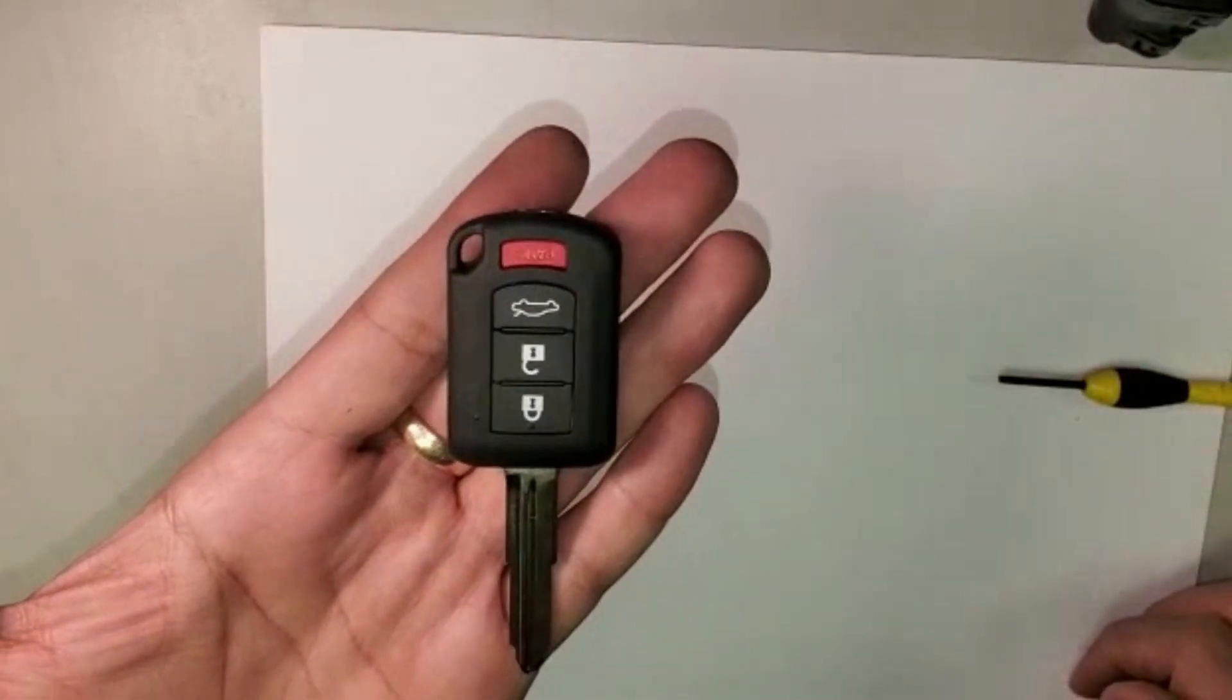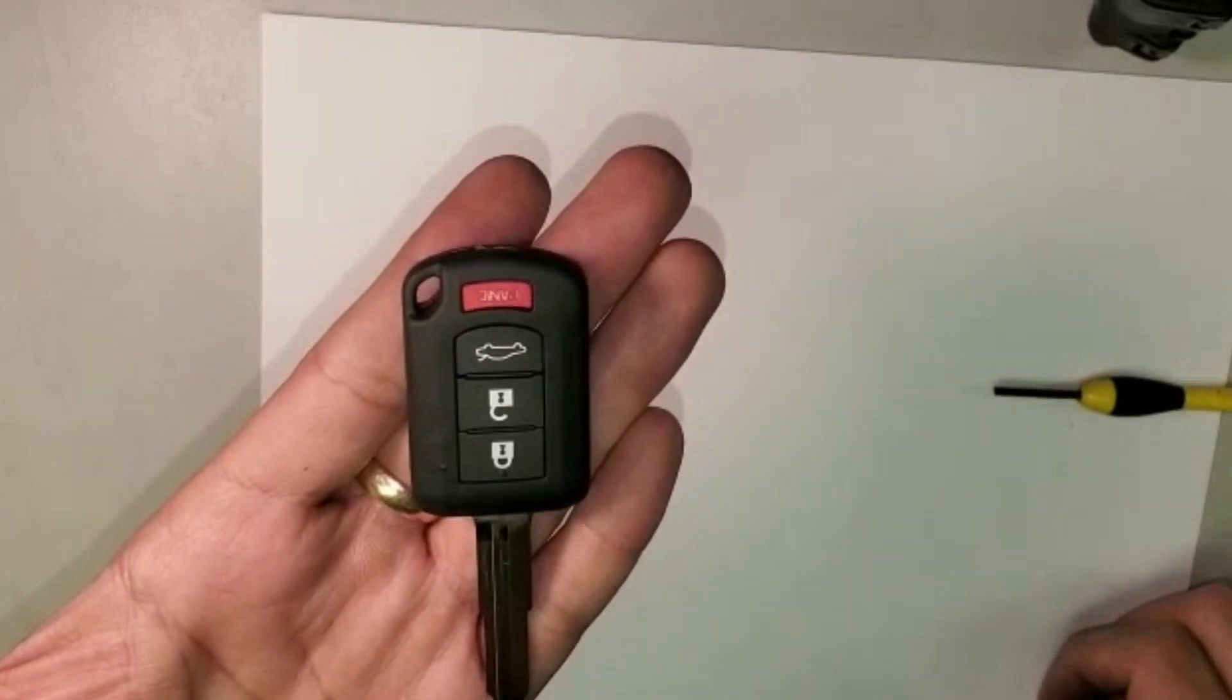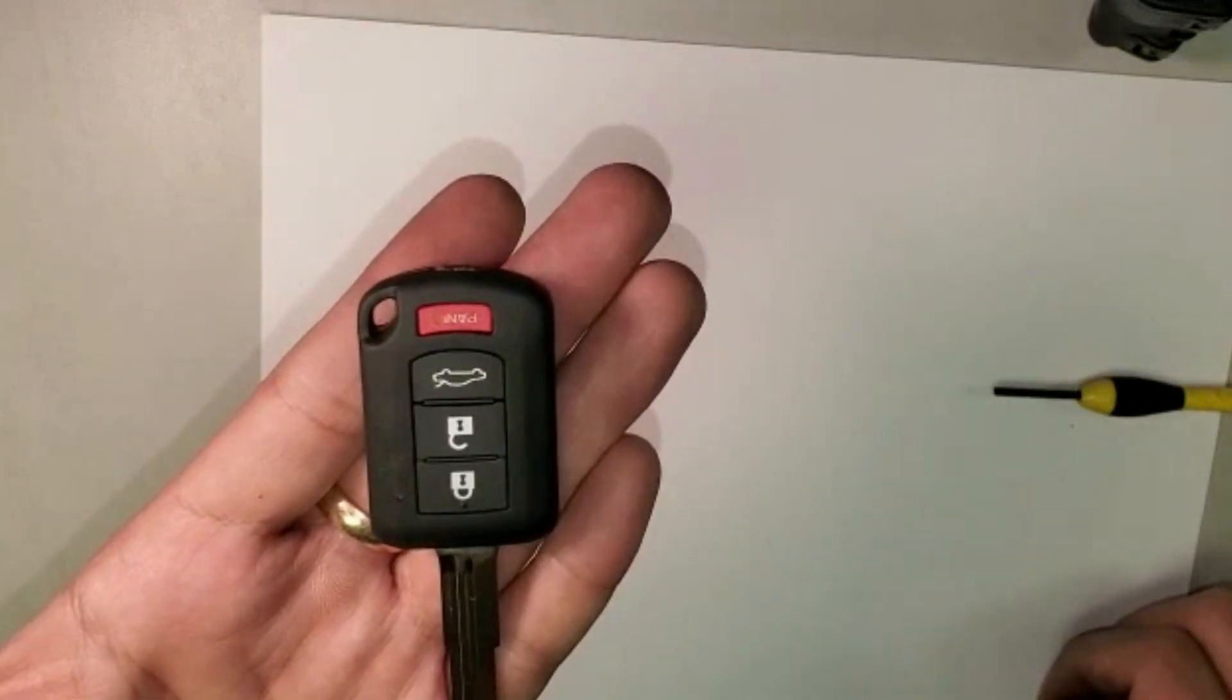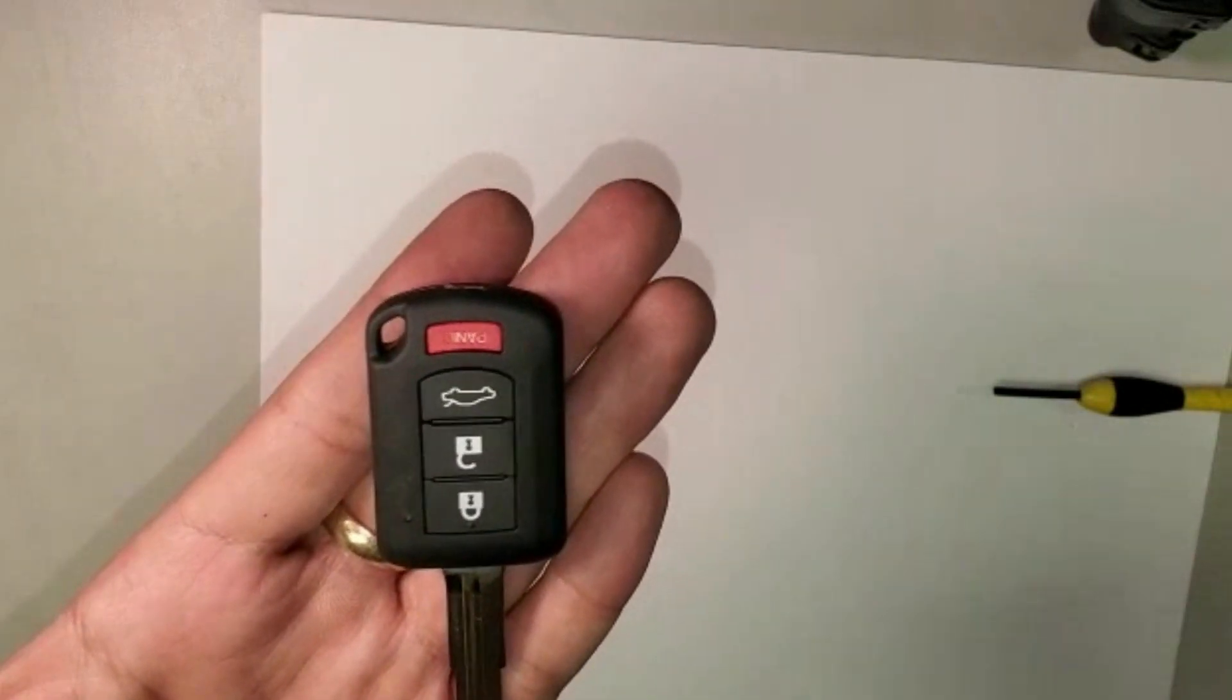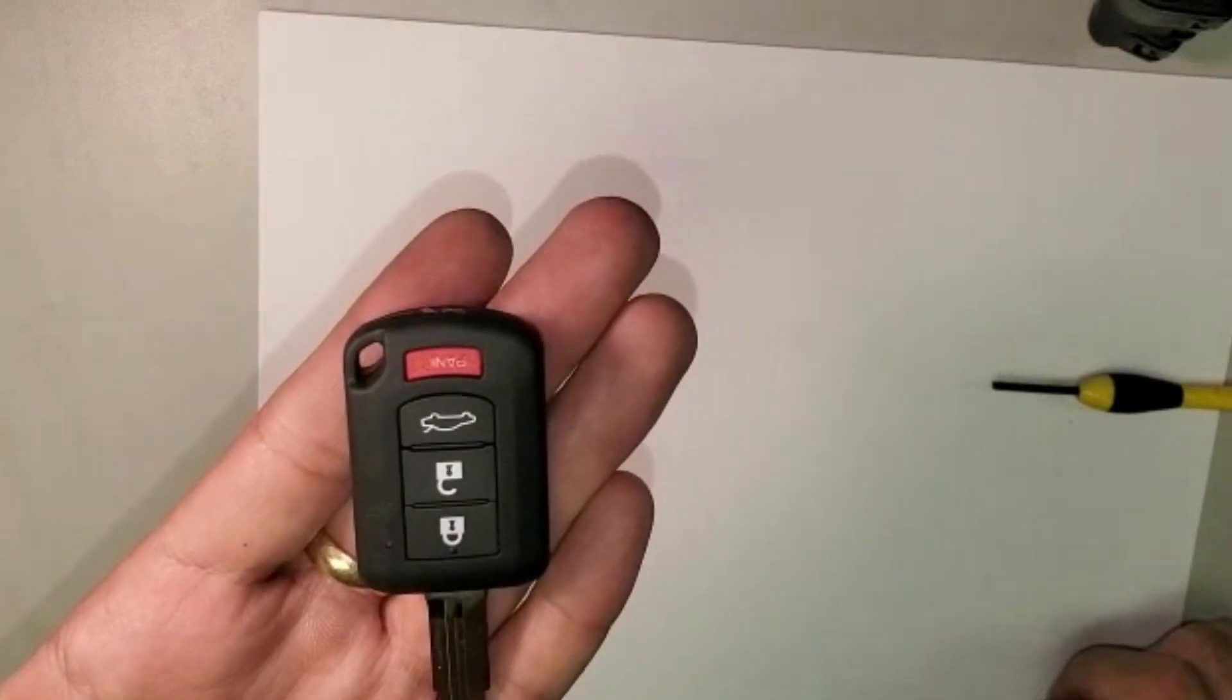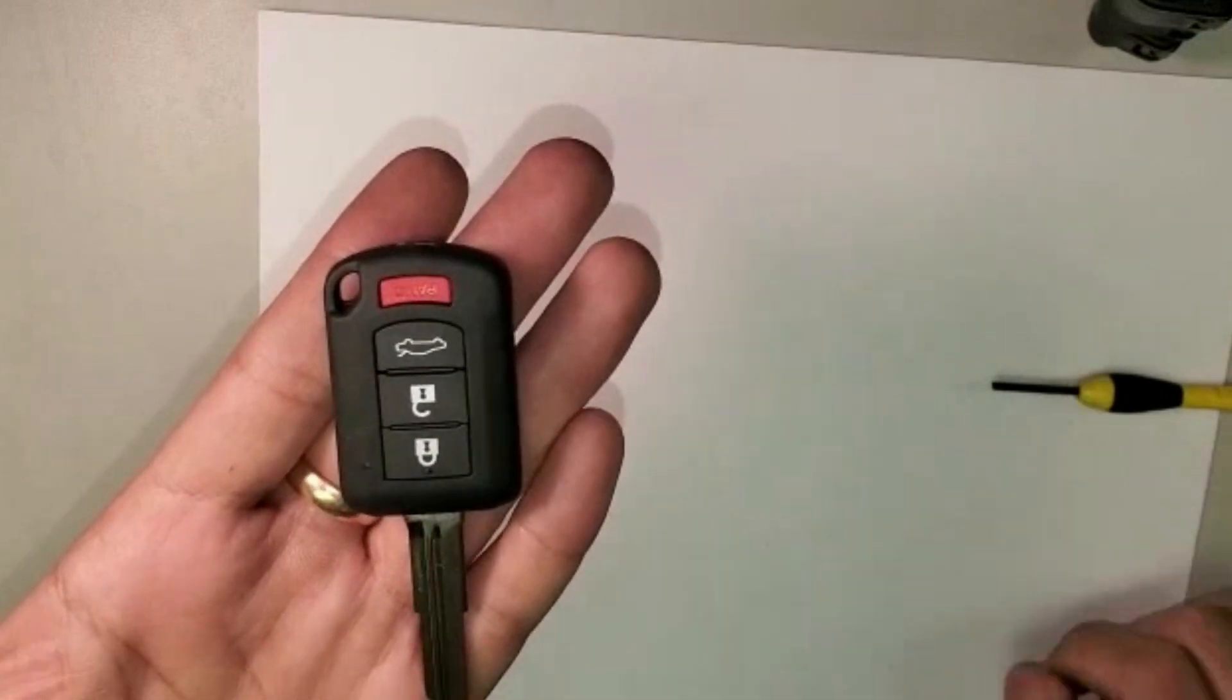Hello everyone, today I'm going to show you how to replace this Mitsubishi transponder key or remote head key battery. In case you see key not detected or you cannot unlock the door, you'll have to replace this key fob battery. The battery you need is a CR 1620, and you can click on the link below to get it online.